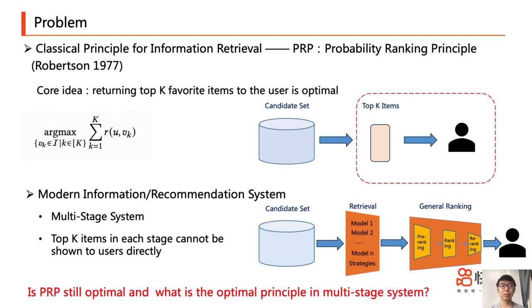This raises pivotal questions: Does PRP maintain its optimality within multi-stage systems? If not, what principles govern optimal performance in these intricate environments?